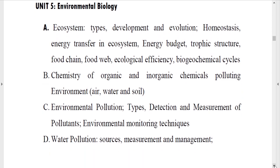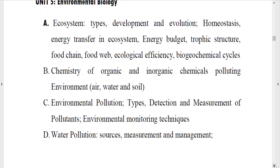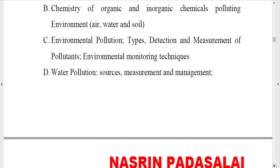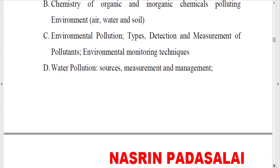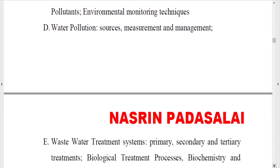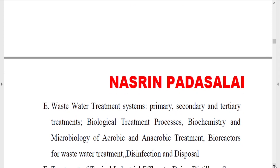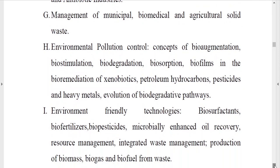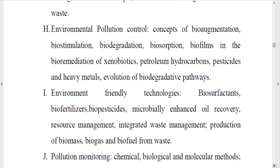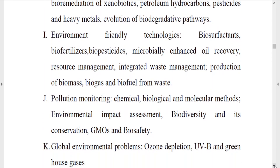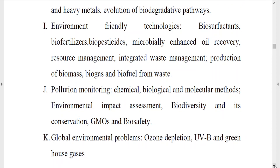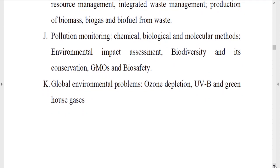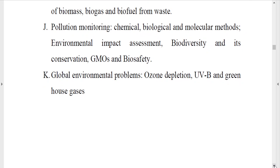The fifth unit is Environmental Biology. First, you need to know about ecosystems — trophic structure, food chains, and food webs. Next, study the list of pollutants, types of environmental pollution, how pollution is detected, and environmental monitoring techniques. Know about water pollution sources and measurement, wastewater treatment, solid waste treatment, how industrial effluents are treated, and pollution control methods like biodegradation, biostimulation, bioremediation, and xenobiotics. Also cover environment-friendly technologies like biogas, biofuel, biosurfactants, and biofertilizers, and recent innovations in those areas.